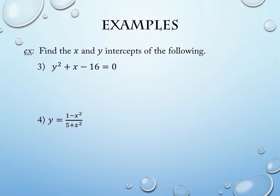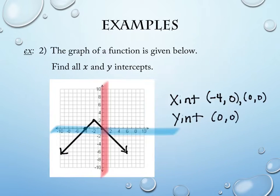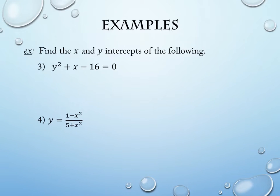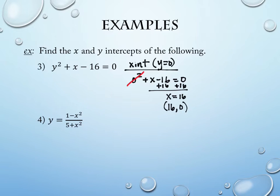Sometimes when we start with an equation that's not linear, the process is still the same: x-intercept when y equals 0, y-intercept when x equals 0. For the equation y² + x minus 16 equals 0, finding the x-intercept means setting y equal to 0: 0 squared plus x minus 16 equals 0, so x equals 16. The x-intercept is (16, 0).